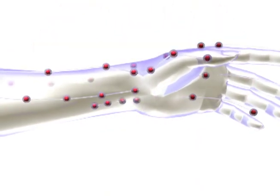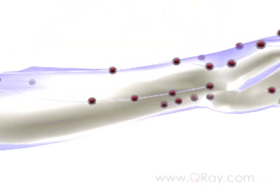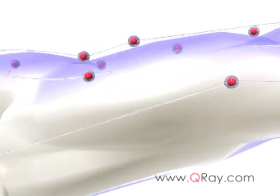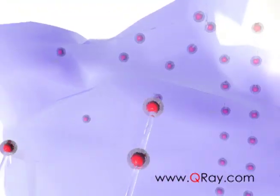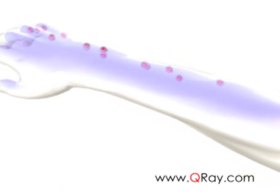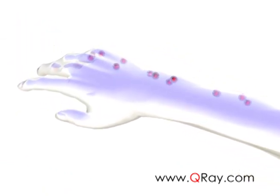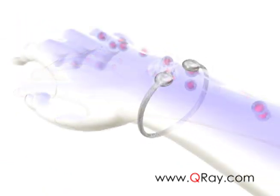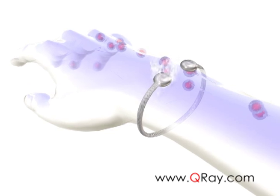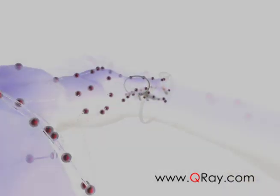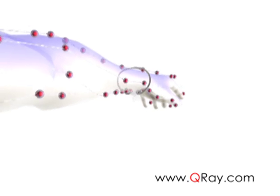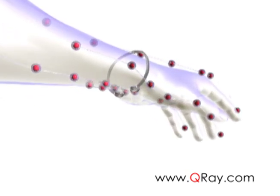The heart meridian runs through the lower part of the left wrist. The LI meridian and the LU meridian flow on the upper part of the right wrist. This is why the Q-Ray bracelet is worn on the right wrist with the opening placed over the LI and LU meridians, or the Q-Ray bracelet is worn on the left wrist with the opening placed over the heart meridian.